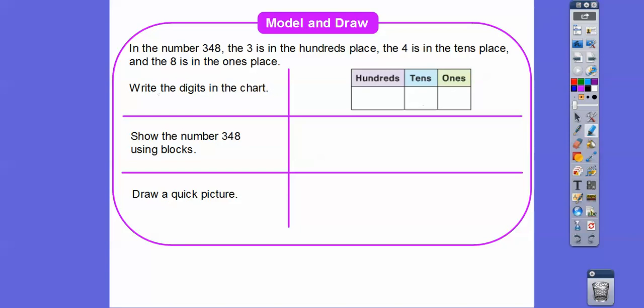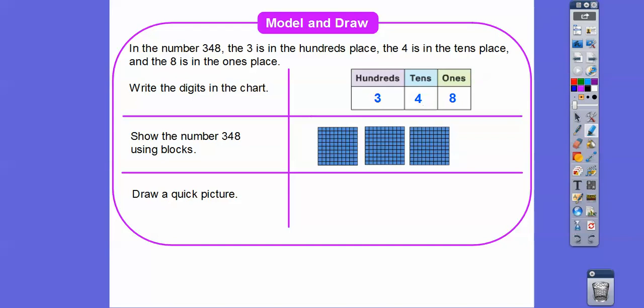So let's go ahead and write the digits in this chart — this is going to be 348 right there. And then we're going to show the number 348 using blocks. Here's 100, here's 200, here's 300 — that represents this 300 right there.